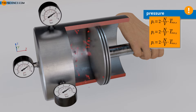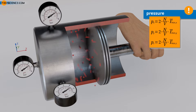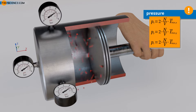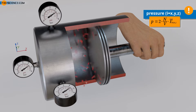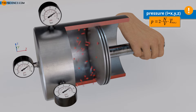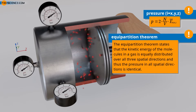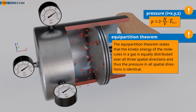However, this is not observed in practice. Experience shows that the pressure increases equally in all spatial directions. According to the pressure equations, the kinetic energy for all three spatial directions must have increased equally. Obviously, the energy supplied during compression is distributed equally among all three spatial directions. This phenomenon of equal energy distribution is called the equipartition theorem, which states that the kinetic energy of molecules in a gas is equally distributed over all three spatial directions, and thus the pressure in all spatial directions is identical.